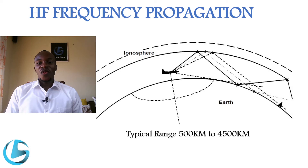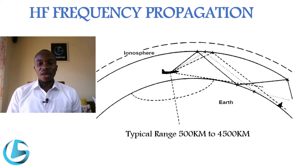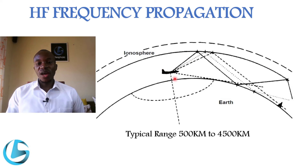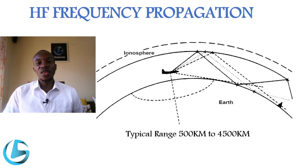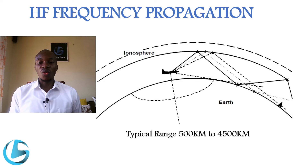HF propagation is enabled by the reflection of radio waves by the ionosphere in the upper atmosphere back to the earth. As you can see in this picture, radio frequencies are transmitted and when they reach the ionosphere, they are reflected back to the earth surface. Unlike VHF communication, where communication depends on direct line of sight, HF communication is not dependent on line of sight because the HF frequencies are reflected by the ionosphere, thus enabling long distance communication.